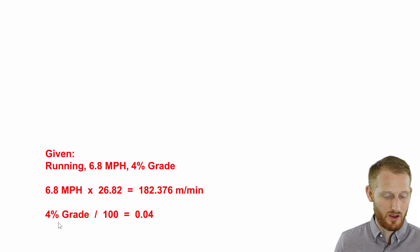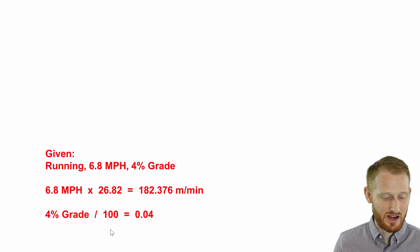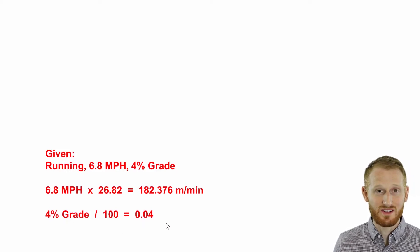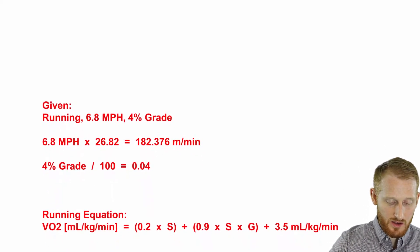The next thing I'm going to do is convert the 4% grade into a decimal format, which is just dividing by 100. So you end up with 0.04 as the grade. So now let's look at the equation.